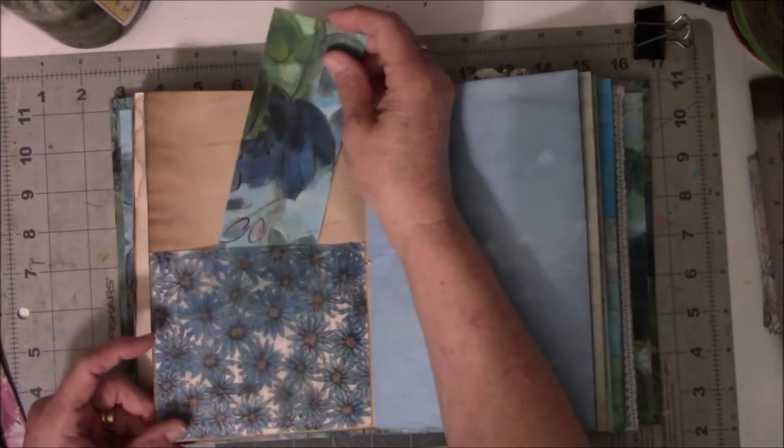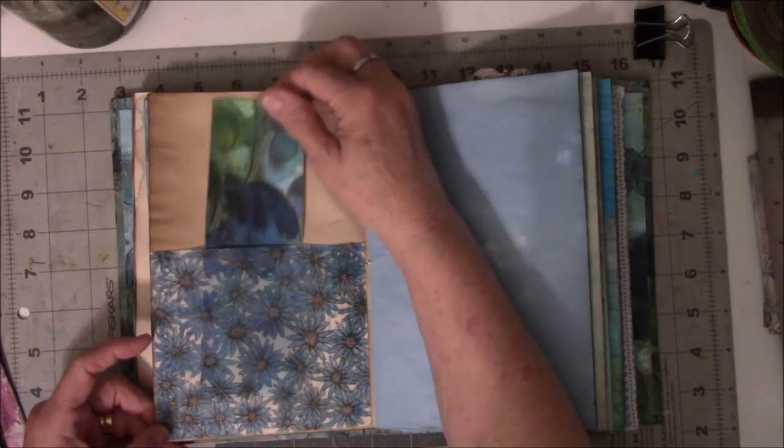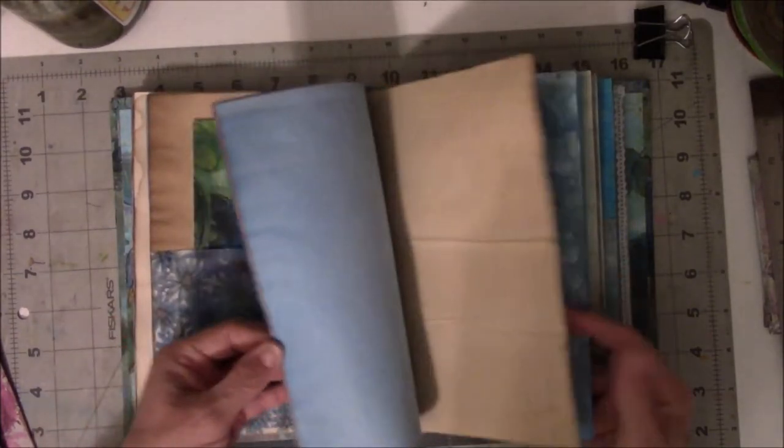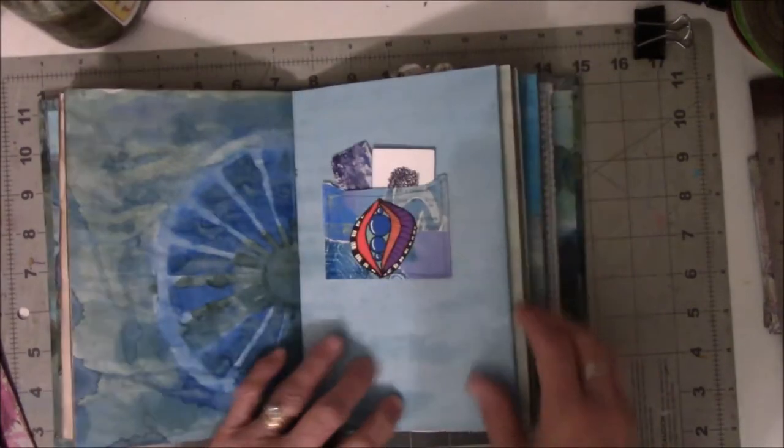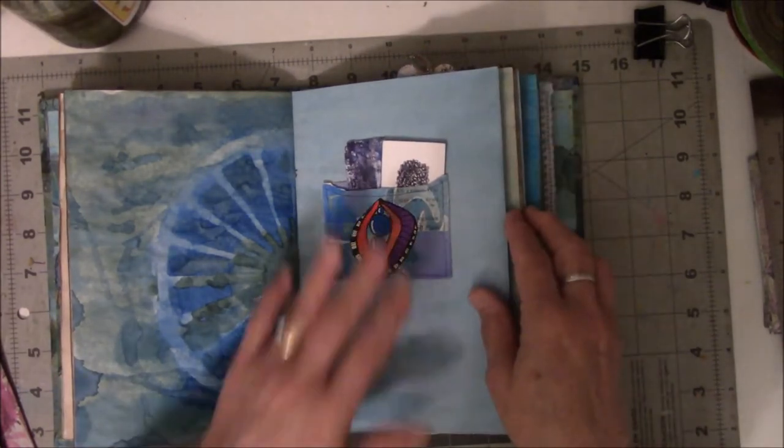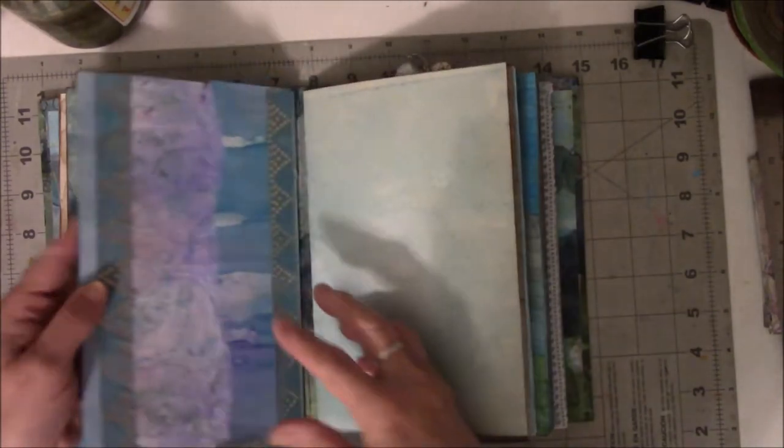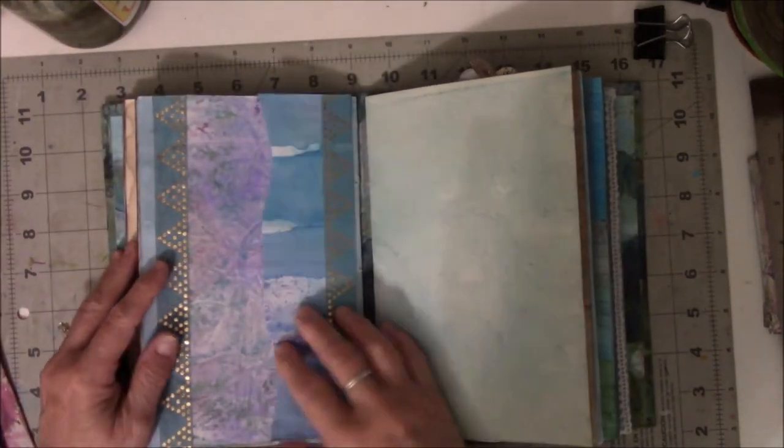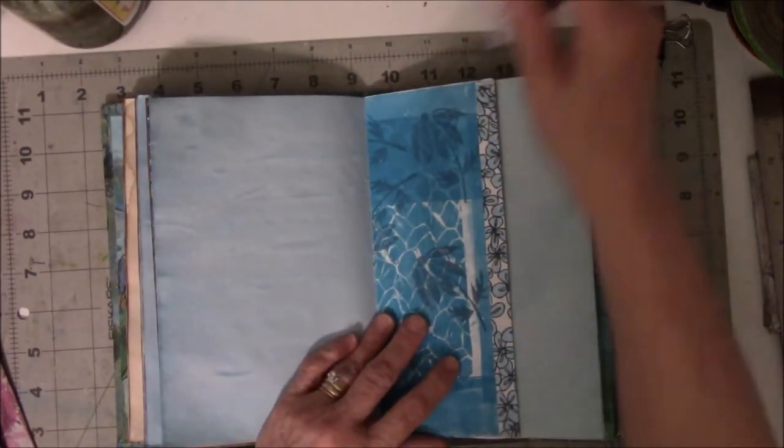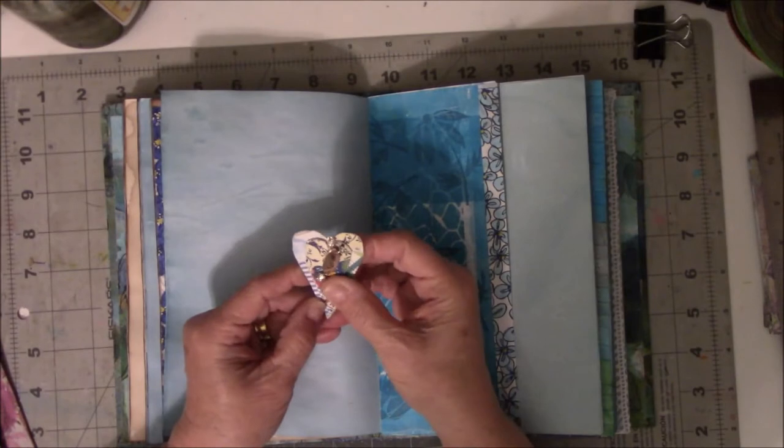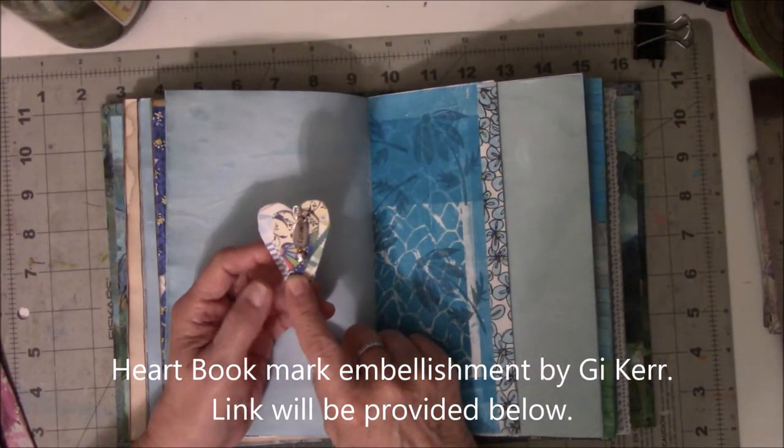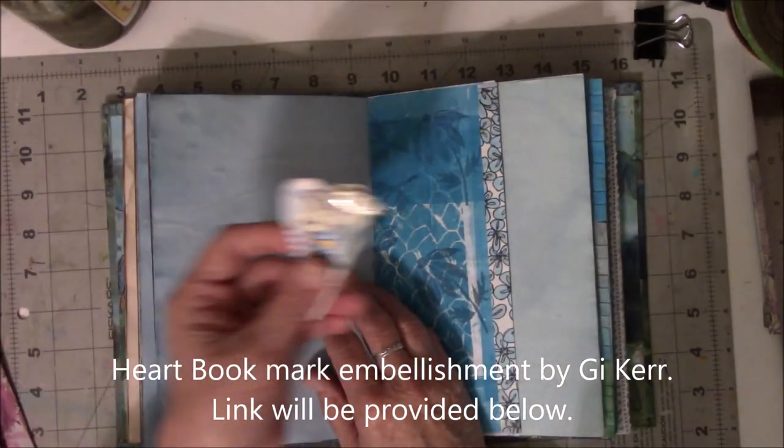There is a mini journal in here with jelly-printed papers. I tried to keep them with colors that are kind of aligned with the blue. I did the flower artwork myself. These are all my drawings. There is a cello envelope with a small tag in it, and I sewed on here so that you would have two layers, the front layer and the back layer.